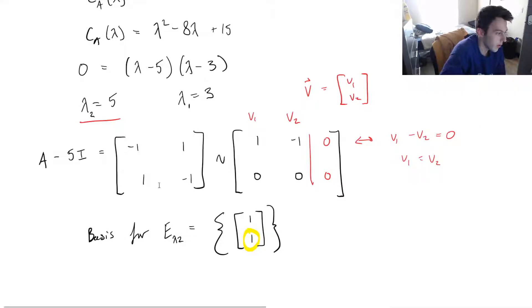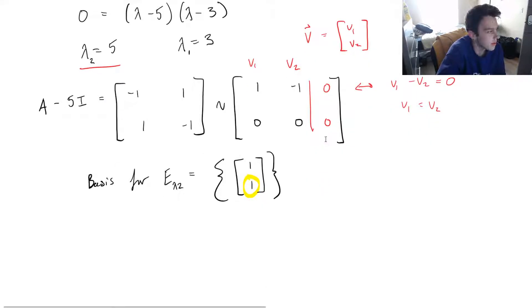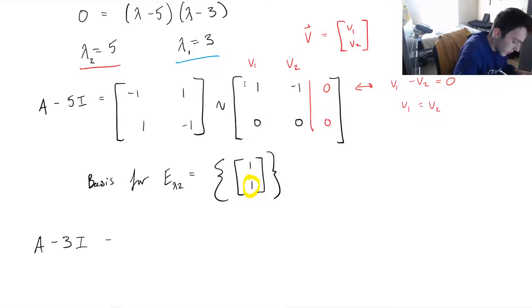So moving on, we have 1, 1 as the basis for lambda 2. Let's consider lambda 1 equals 3 now. So let's compute A minus 3 times I. And 4 minus 3 is 1, so that'll be both of my diagonals. All of my other entries are 1. And this is clearly just the same equation, so this will reduce to 1, 1, 0, 0.